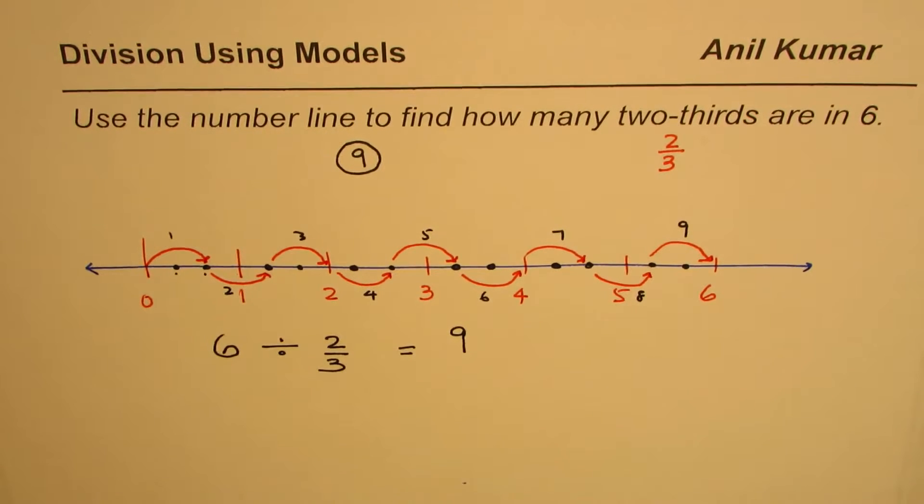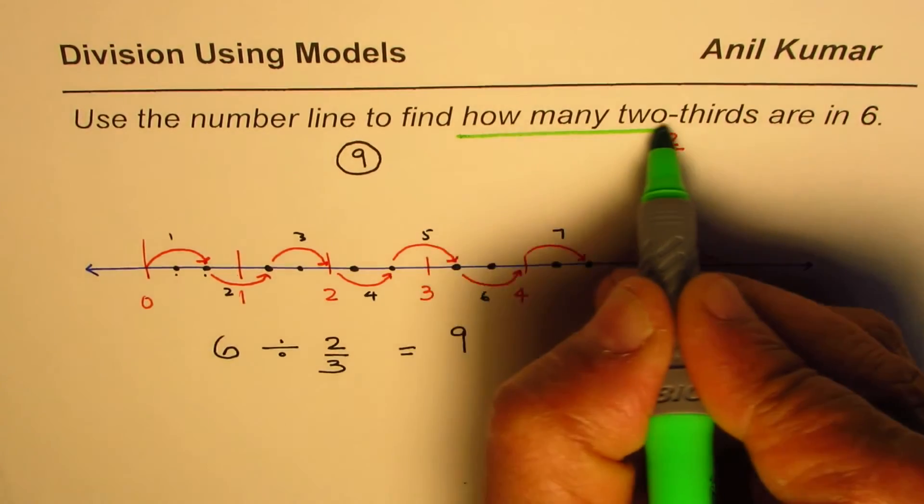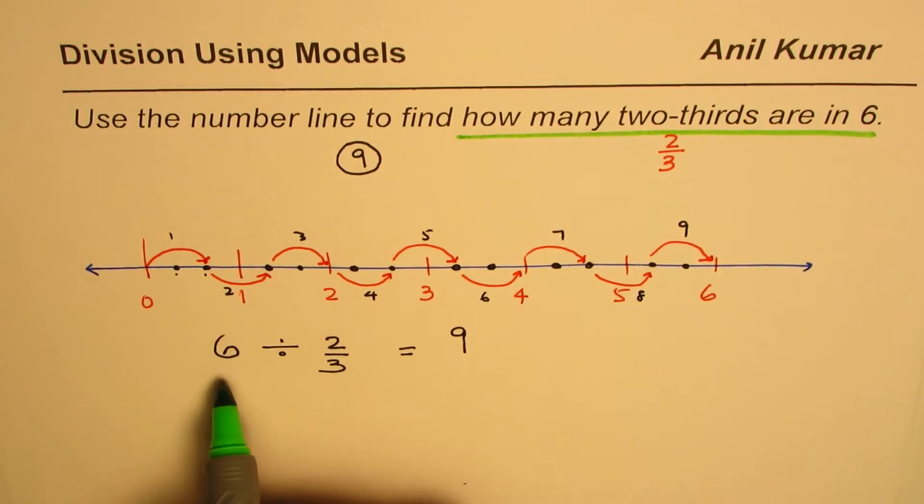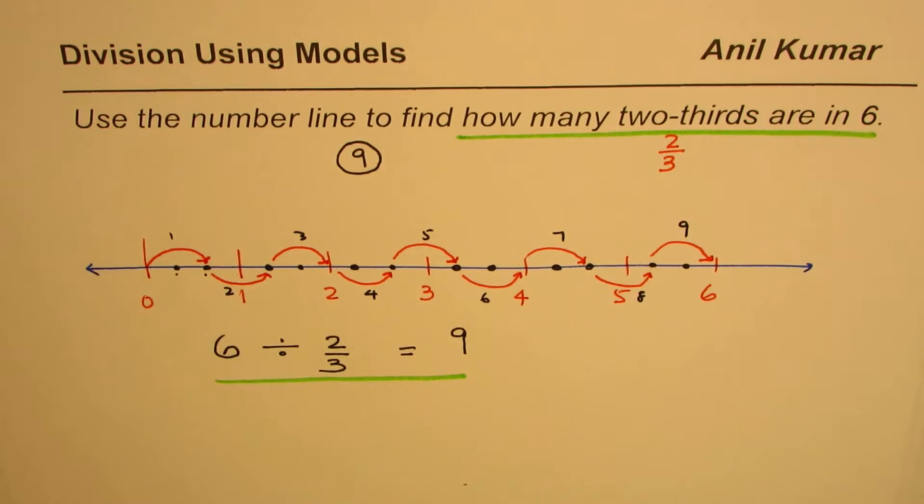So basically if the question is how many two-thirds are there? Let's concentrate on this part. How many two-thirds are in 6? That means divide 6 by two-thirds. Get your result. There are 9 two-thirds in 6. So that is how you can actually use a number line to get the result.